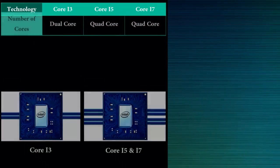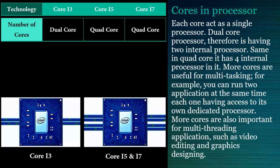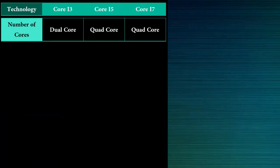Core i3 supports dual core whereas Core i5 and Core i7 support quad core. Each core acts as a single processor. A dual core processor therefore has two internal processors, and a quad core has four internal processors. More cores are useful for multitasking — for example, you can run two applications at the same time, each one having access to its own dedicated processor. More cores are also important for multi-threaded applications such as video editing and graphics designing, which use multiple cores at the same time.